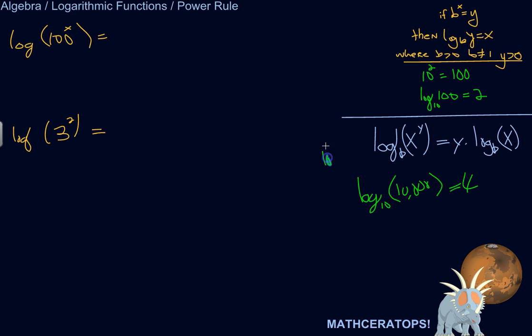Or, in other words, 10 to the 4th is a 1 with 4 zeros behind it, which you might remember from scientific notation, little shortcuts. So log base 10 of 10,000 is 4.